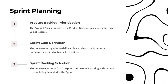The product owner has carefully prioritized the product backlog, ensuring we focus on the most valuable items for the sprint. As a team, we've worked together to define a clear and concise sprint goal, outlining the desired outcome we want to achieve. Based on the prioritized product backlog, the team has selected specific items we are committed to completing during the sprint, and we will work together to ensure we deliver on these commitments.